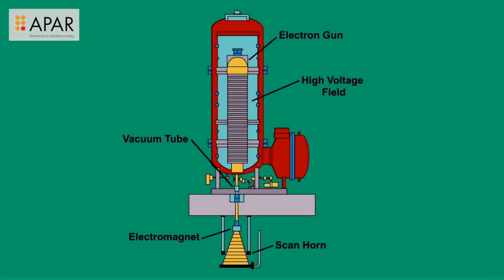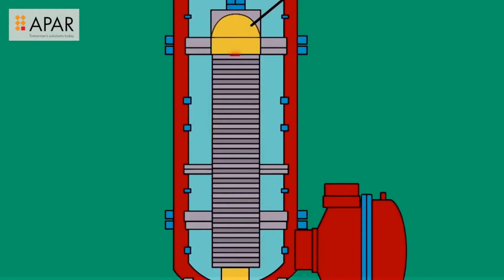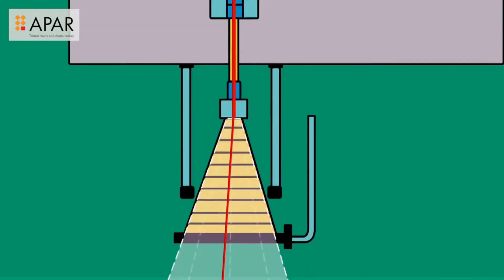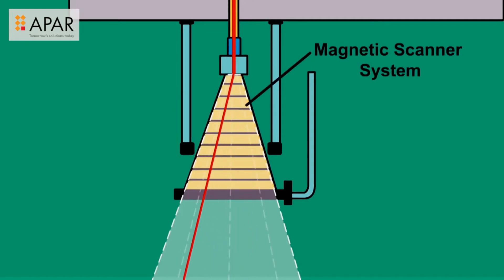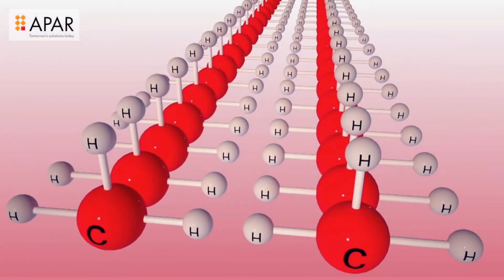An electron beam system consists of an electron gun to generate and accelerate the electron beam. High voltage is used to produce a high energy electron beam. There is a magnetic scanner system to direct and control the electron beam when bombarding the material.